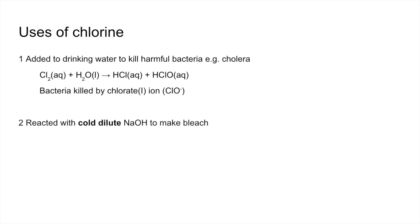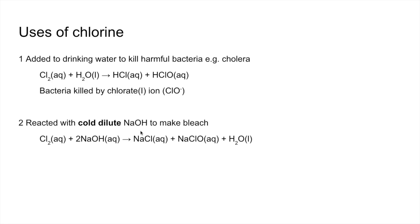The other use is the production of bleach, where chlorine is reacted with cold dilute sodium hydroxide. The equation is similar: instead of HCl we get NaCl, instead of HClO we get NaClO, and we also get water. The bleach is sodium chlorate(I), NaClO, which also contains the chlorate(I) ion.